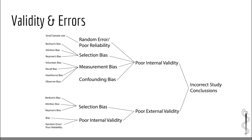Why is this important? Errors in the form of systematic error and random error are both threats to the validity of health research projects. Studies with poor validity will always make incorrect and unreliable study conclusions. As researchers and consumers of health research, it is our duty to recognize and understand these types of errors when they occur.